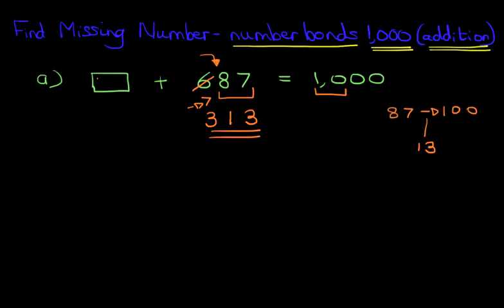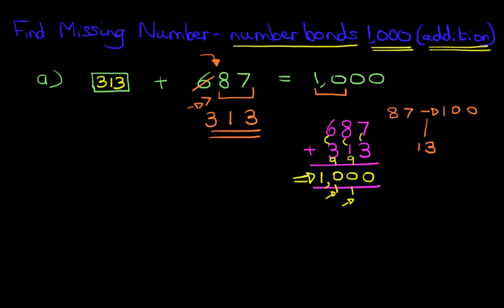We can write this down and we can always check. What we can do is write down 687 and then add 313 and see if we get to 1,000. Starting with the units, 7 plus 3 is 10. We've got 0 here and 1 here. The tens column, we've got 8 plus 1 is 9, and then plus the 1 we're carrying over, that is 10. So we've got 0 and 1 over here. As for the hundreds, we've got 6 plus 3, which is 9, plus the 1 we've carried over, and that is 10. That is 1,000. So this answer is correct.